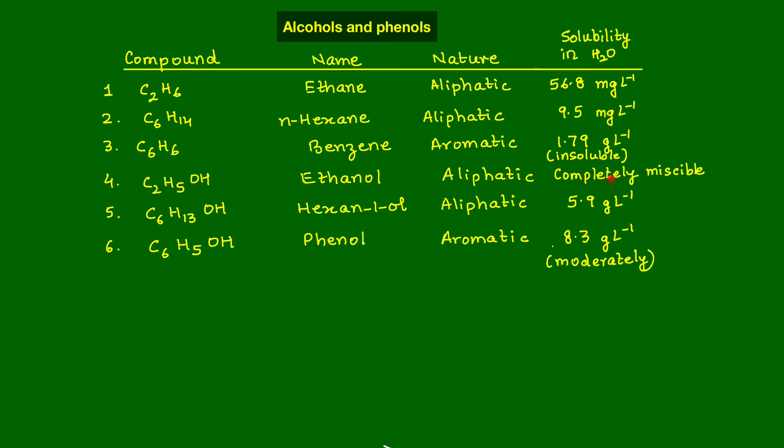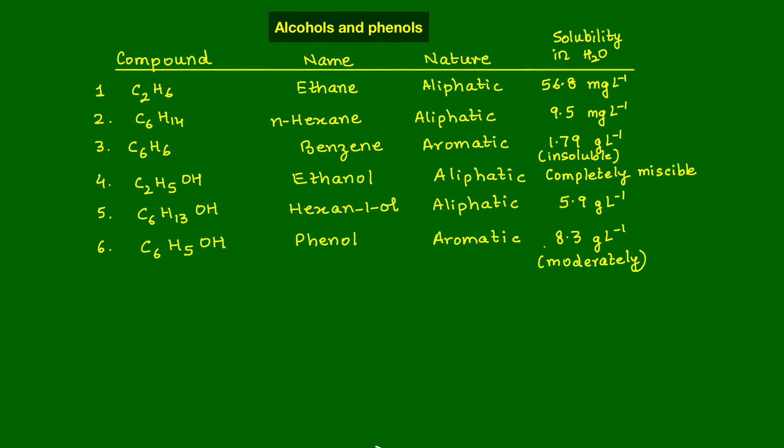Look at ethanol. Oh, surprising, it's completely miscible. Ethanol completely dissolves in the water. But if I compare the solubility of hexane 1-ol, it again is 5.9 gram. You see, compared to ethanol, the solubility of hexanol has gone down. But it is definitely again higher than the aliphatic N-hexane.